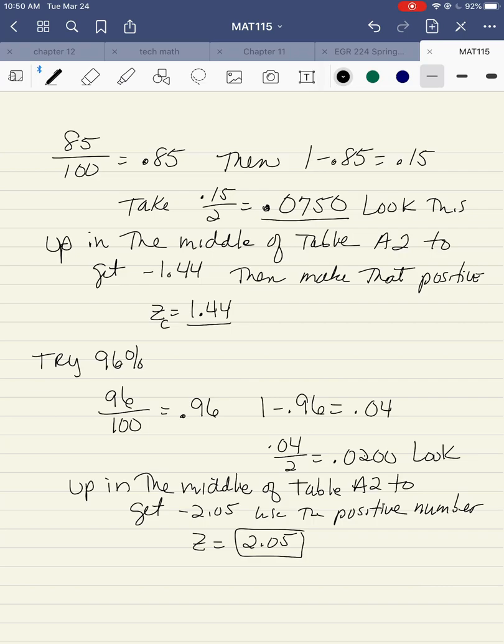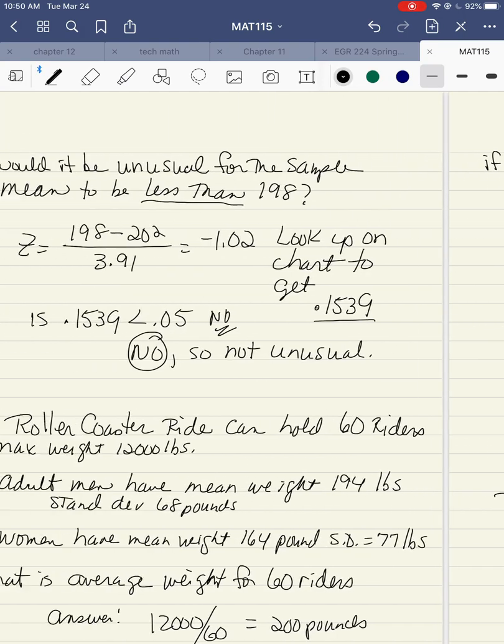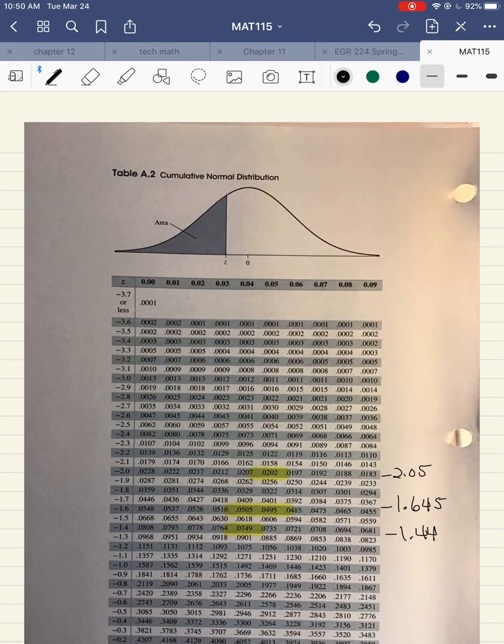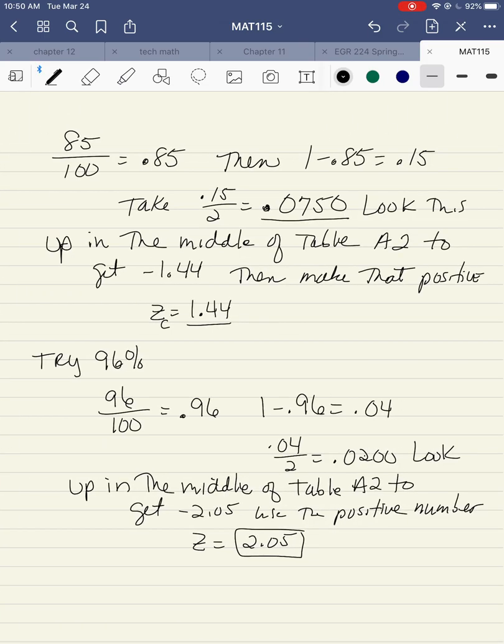You look that up in the middle of table A2. So again, going back to the middle of table A2, there it is right there, 0.0202. That corresponds to a negative 2.05. And again, I use the positive number, so it comes out to a positive 2.05. That's the critical value for that.